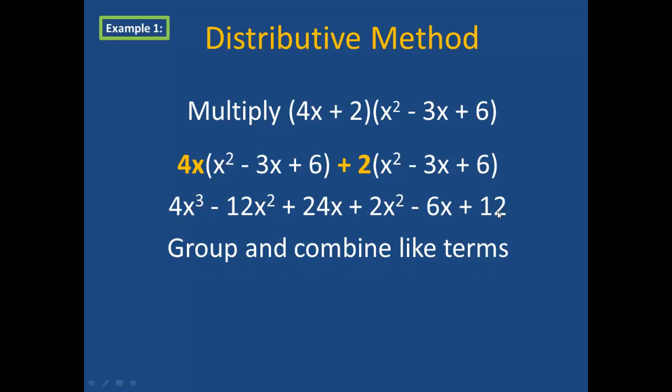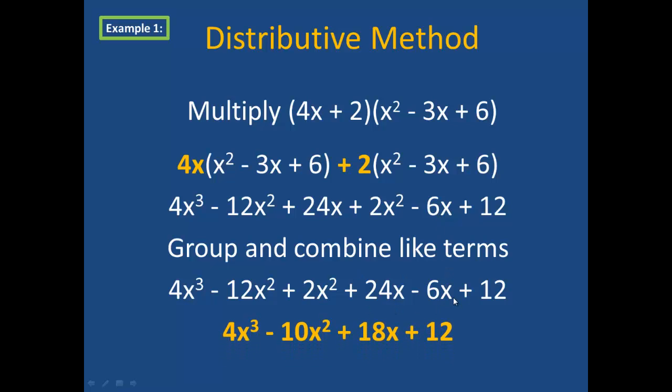I'm now going to group these terms by like terms. Negative 12x squared and 2x squared are like terms, so I have put them next to each other, and 24x and negative 6x are also like terms. I'll now combine the like terms. Negative 12x squared combines with 2x squared to give negative 10x squared. 24x minus 6x combines to be a positive 18x. So my final product is 4x cubed minus 10x squared plus 18x plus 12.